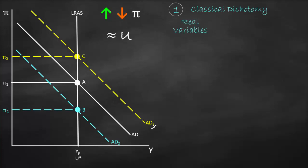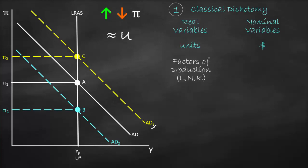In Classical Dichotomy theory, we classify long-run variables as real variables and nominal variables. Real variables means that we measure them in terms of units — how many units do we produce — while nominal variables are measured in dollars, in currency. Therefore, for real values we simply refer to the factors of production in terms of labor, capital, and technology. In the long run we reach our potential, which means we utilize all our factors of production and all our resources, and that is why we reach an unemployment rate equal to NAIRU.